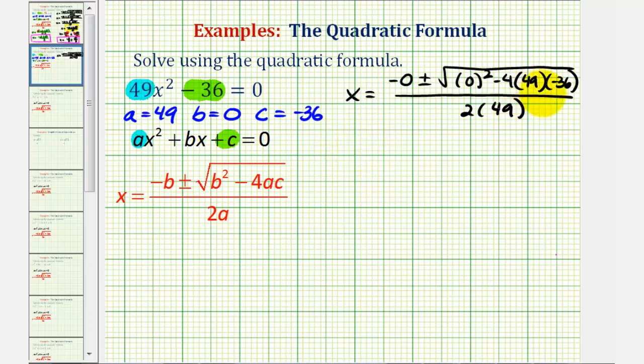So now we'll begin to simplify. We'll have x equals, this is just zero, so we have plus or minus the square root of negative four times 49 times 36, which is actually equal to 7056, divided by two times 49, which is 98.